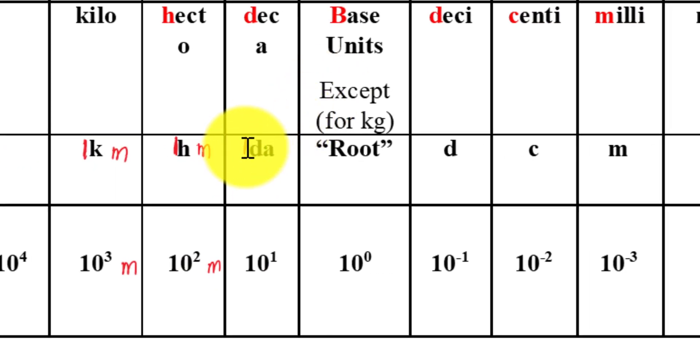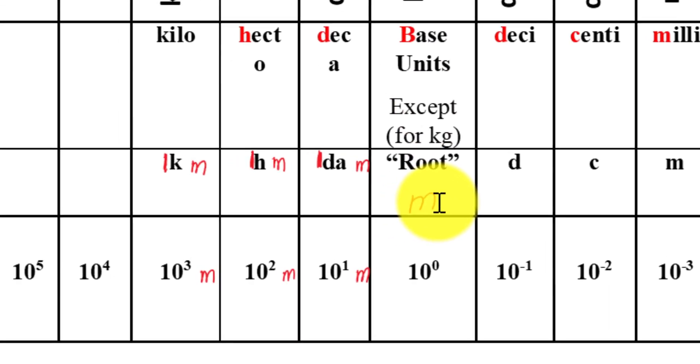Deca: one decameter equals ten to the first meter. And we are at the base unit. Base unit will be meter because that's our base unit.